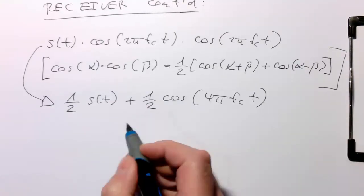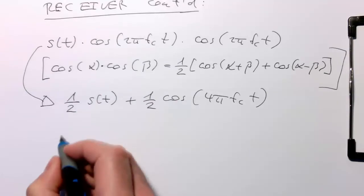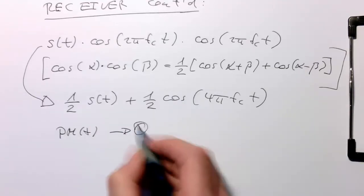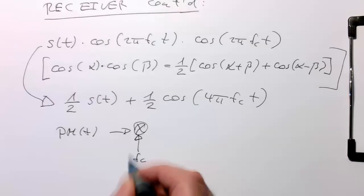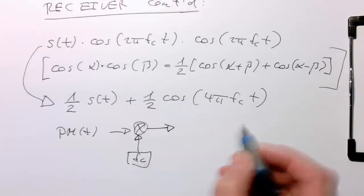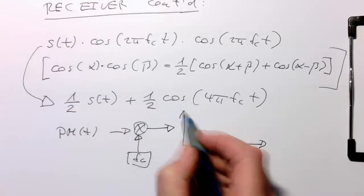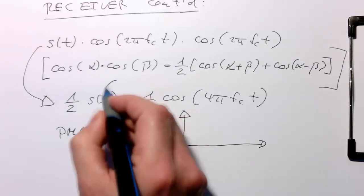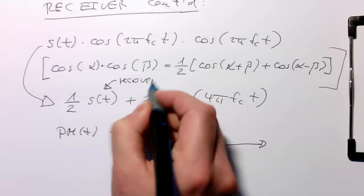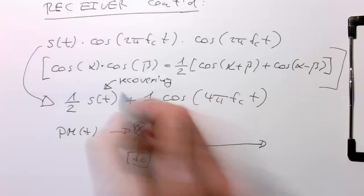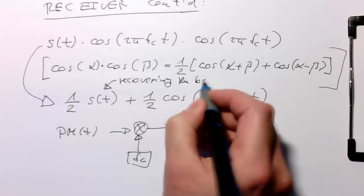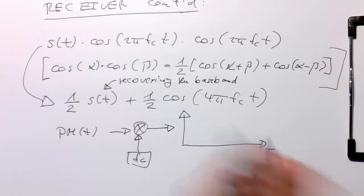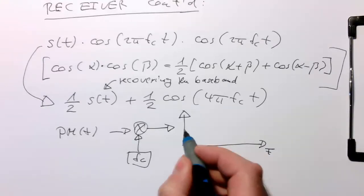The output of our multiplier—let me draw this diagram again. We multiply with our carrier, and the output shows we're getting back our symbols. We are recovering the baseband.